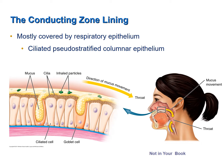Most of the Conducting Zone is covered by ciliated pseudostratified columnar epithelium — the tissue we examined under the microscope in the tissues lab at the beginning of the semester. Numerous goblet cells secrete mucus, which helps humidify the passing air and also helps trap particles and microbes that might otherwise reach the lungs. Cilia move the mucus and trapped particles toward the pharynx, where the mucus is either swallowed or spat out. Cilia in the nasal cavity beat downward toward the pharynx, while cilia in the lower respiratory tract beat upward toward the pharynx.